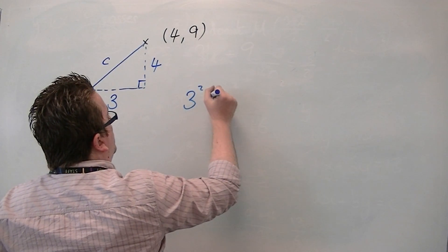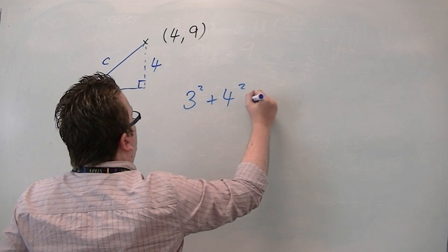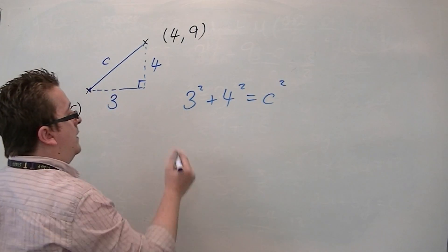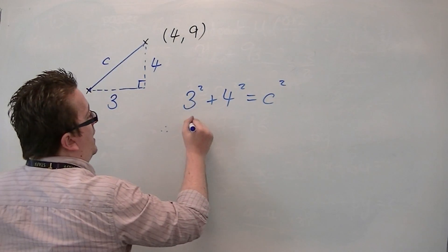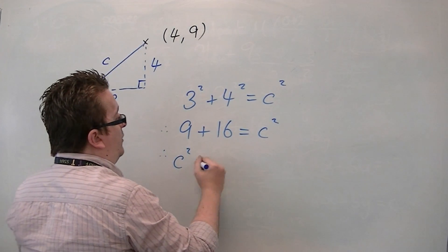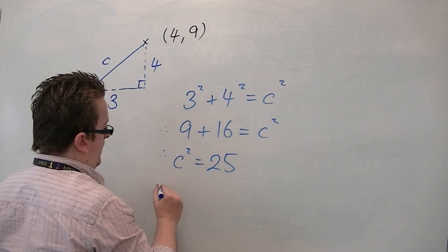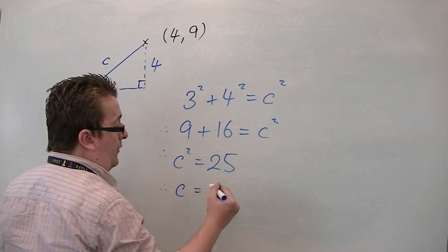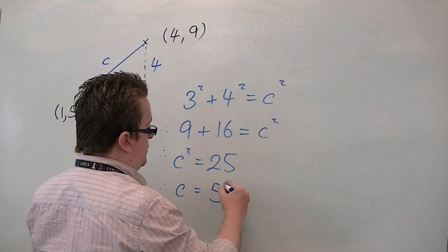So, a squared plus b squared is equal to c squared, therefore we have 9 plus 16 is c squared, therefore c squared must be 25. So, c is the square root of 25, which is just 5.